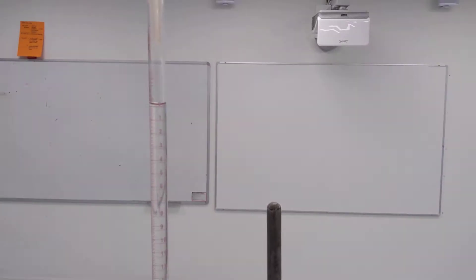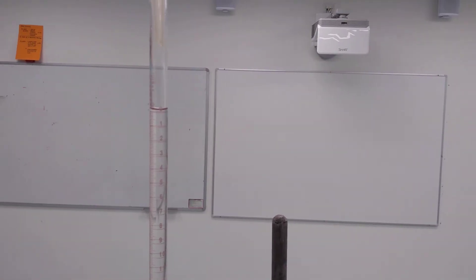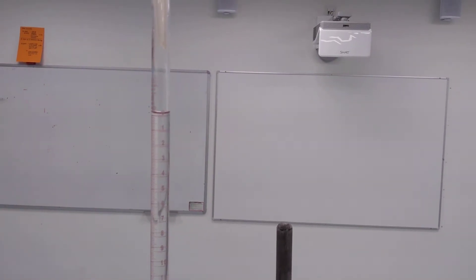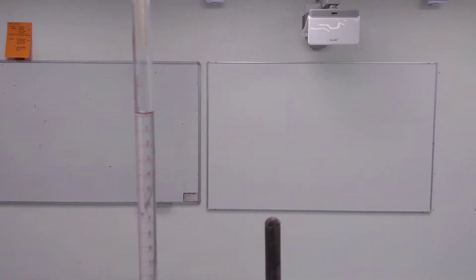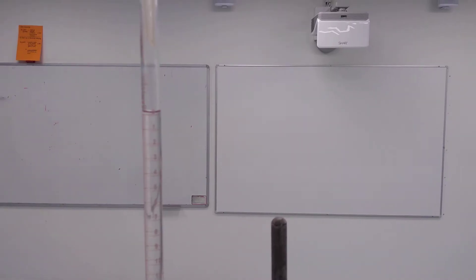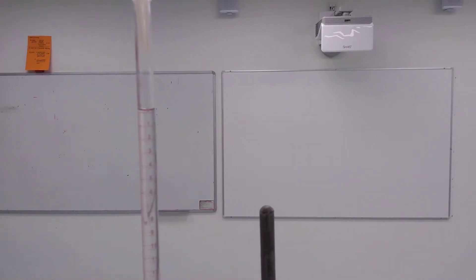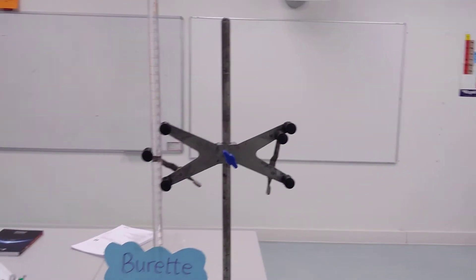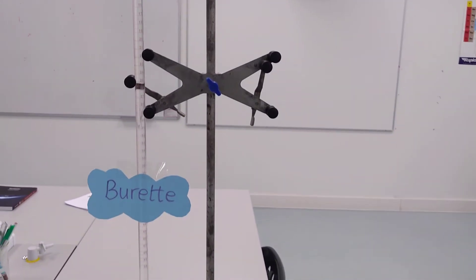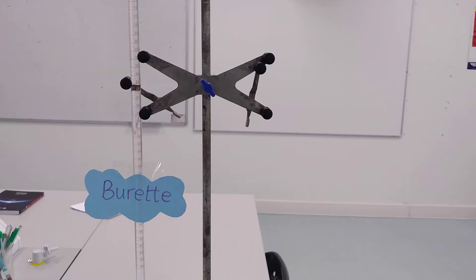You might just about be able to see there's a slight curve at the top of the sodium hydroxide, and we call that curve the meniscus. That's always where we're going to try and measure from when we're measuring here.